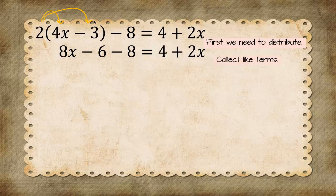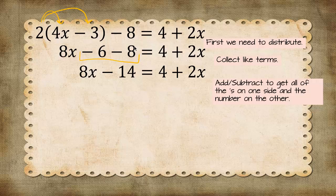Our next step is to collect like terms. So I took negative 6 plus negative 8 and that's negative 14. The next step is to get all of the x's on one side and all of the numbers on the other side, and we do that by adding and subtracting. So the first thing I did was subtract 2x from both sides. We end up with 6x minus 14 equals 4 because 2x minus 2x is 0.